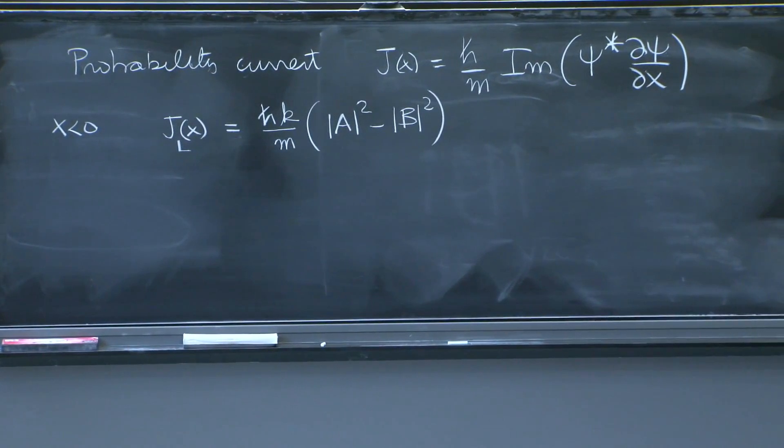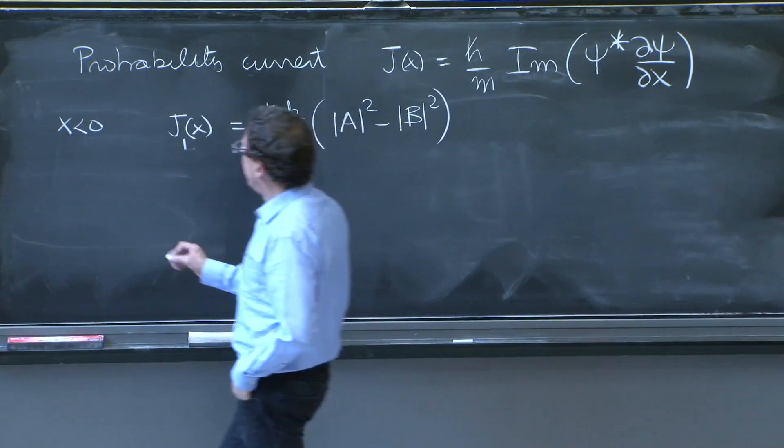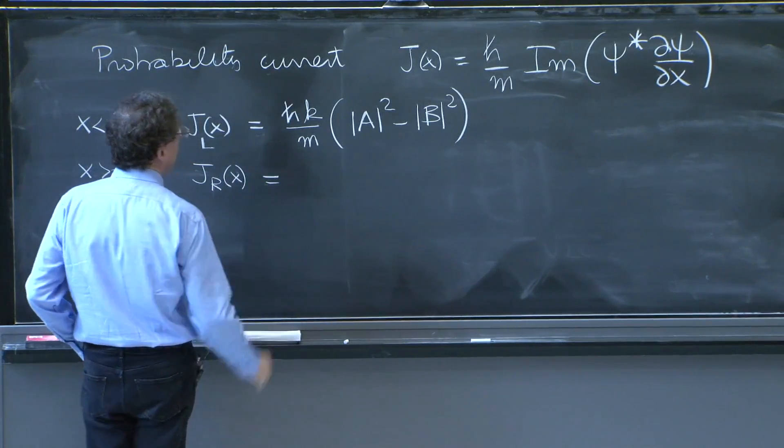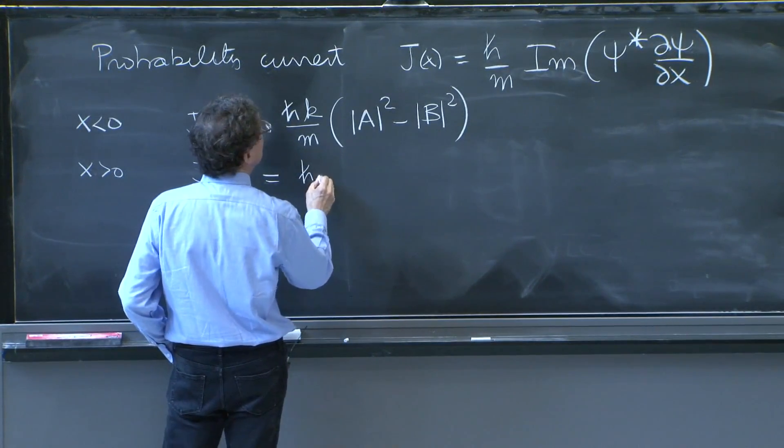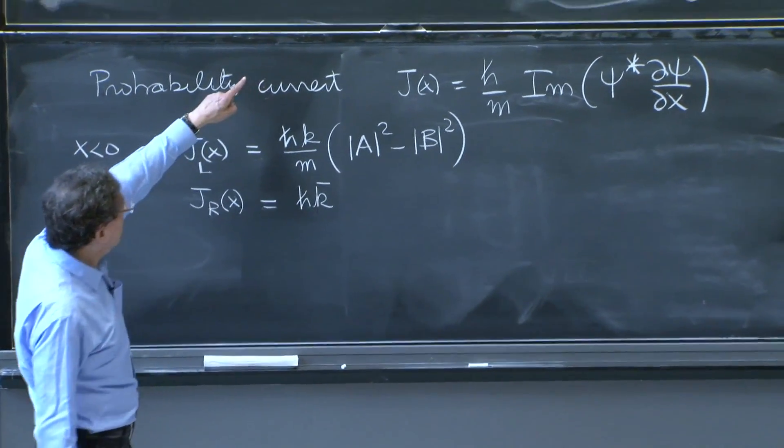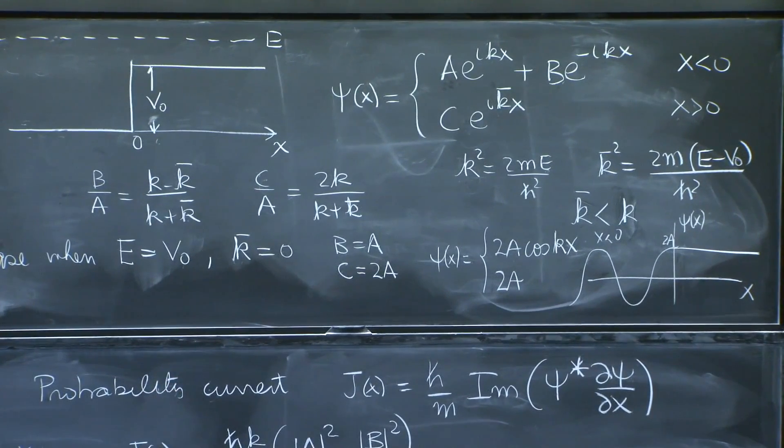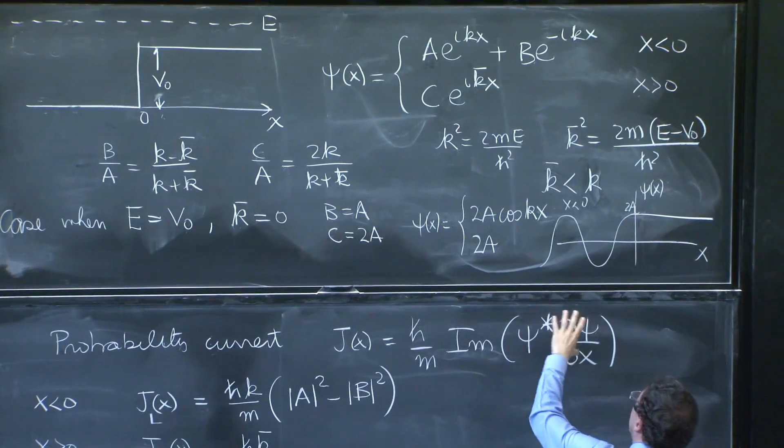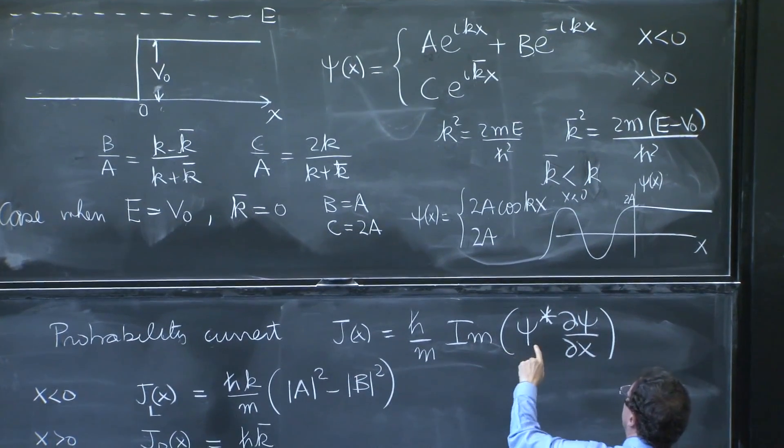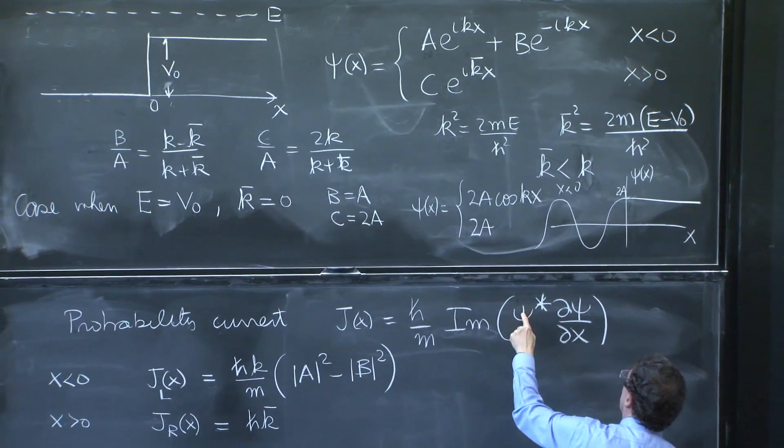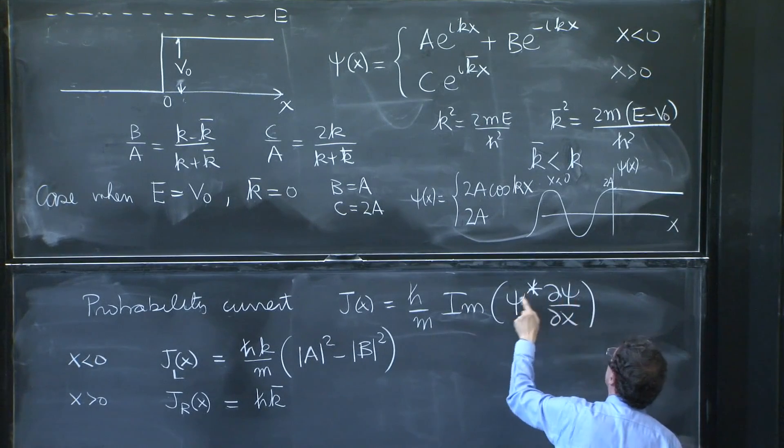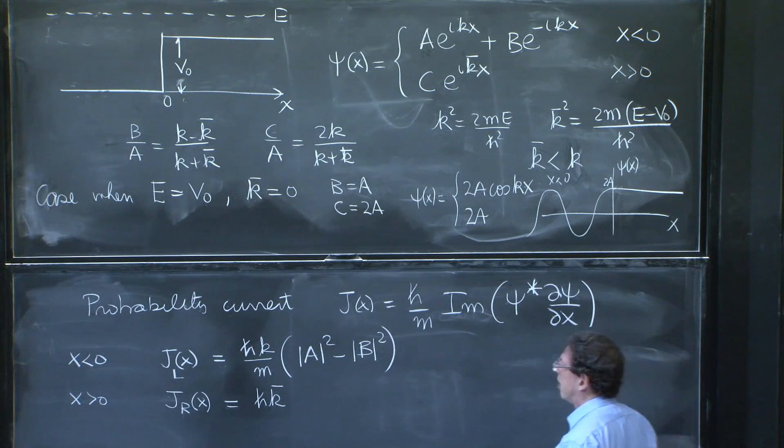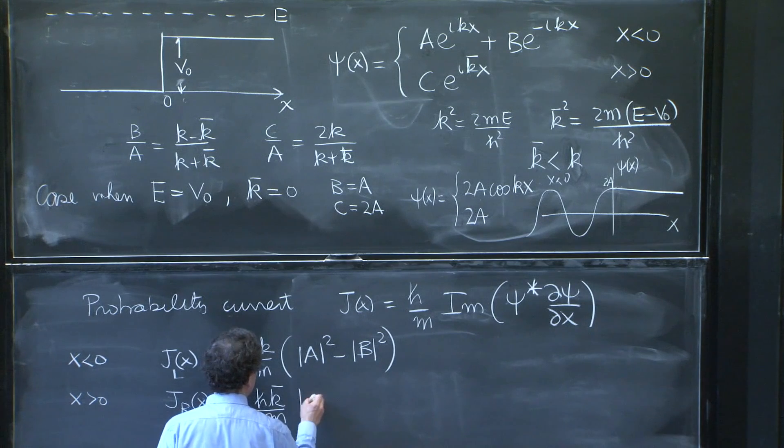And x greater than 0, J_right(x) would be equal to ℏk̄. Now that, you can almost do it in your head. This Ce^{ik̄x}. Look what's happening. From ψ*, you get the C*. From ψ, you get the C. So that's going to be a |C|². The phase is going to cancel between the one here and the one on ψ. But the derivative will bring down an ik̄. And the imaginary part of that is just k̄. So the answer is this.